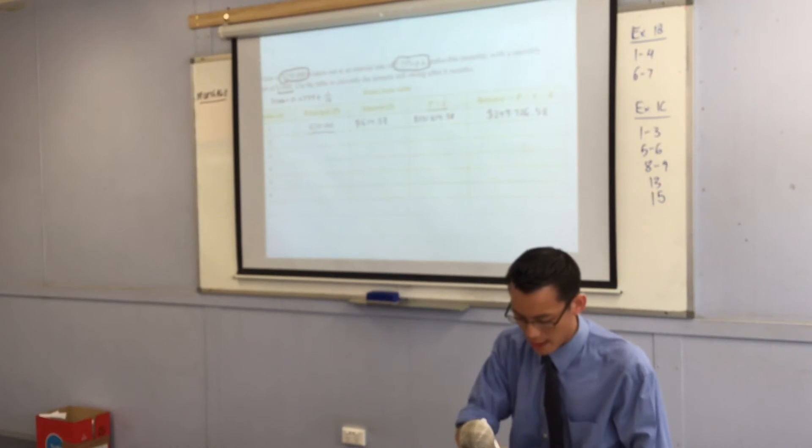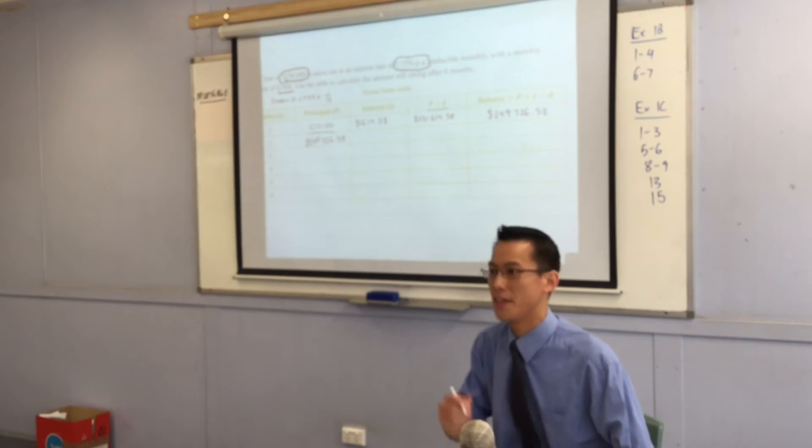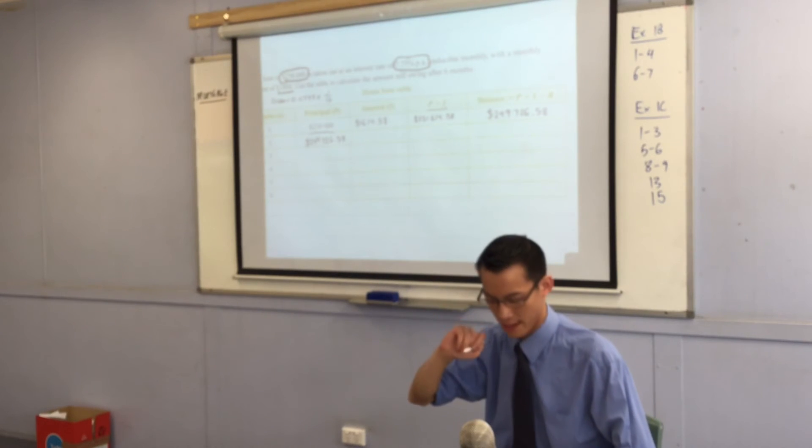It's going to be $249,726.58. That's the new principle as it were. What am I going to do to work out the next step?